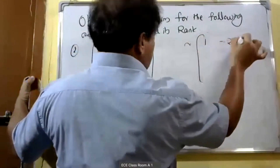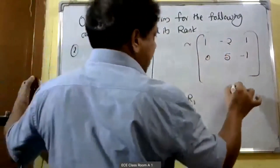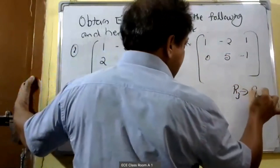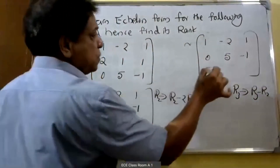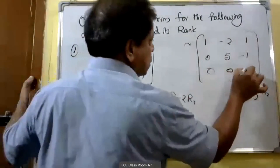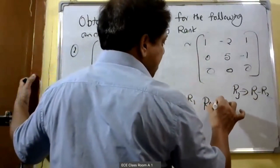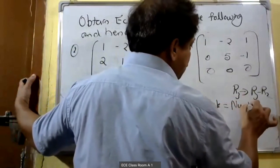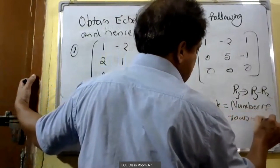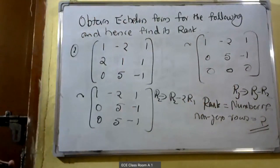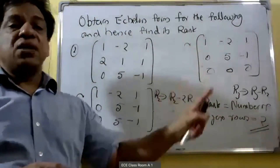In the second step, R3 changes to R3 minus R2: 0 minus 0 equals 0, 5 minus 5 equals 0, minus 1 minus minus 1 equals 0. This is the echelon form. Rank equals the number of non-zero rows, which is two. Therefore rank equals two. This is the procedure to convert a given matrix to echelon form and find its rank.